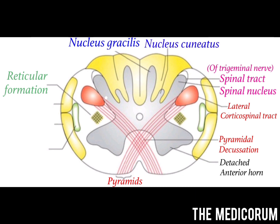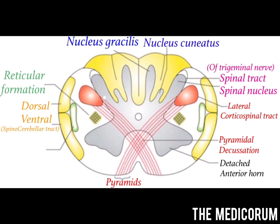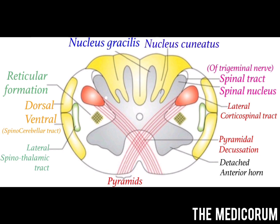On the lateral side we have the reticular formation, which is present on all cross-sections of the medulla. We also have the dorsal and ventral spinocerebellar tract and the lateral spinothalamic tract.